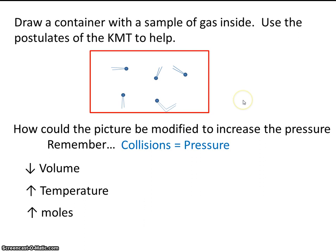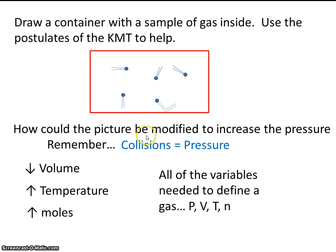Lastly, we could increase the number of moles. If we could somehow inject more gas molecules in here, well of course that would create more collisions, so that would create more pressure as well. So all of the variables needed to define a gas are pressure, volume, temperature, and moles. We'll be using these four variables all unit long. So this was an overview of the kinetic molecular theory.